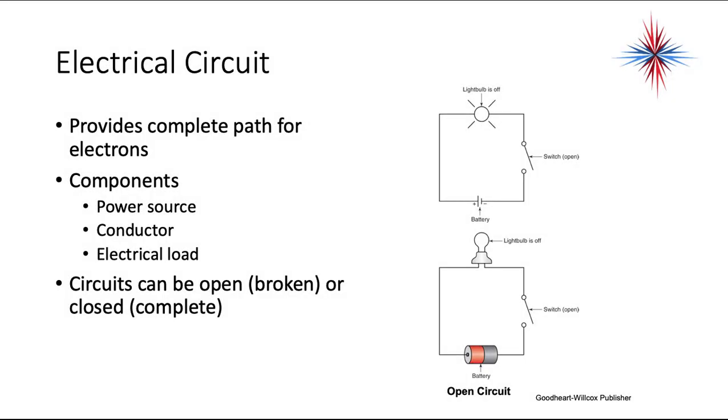An electrical circuit provides a complete path for electrons. It has to have a power source, it has to have a conductor, it has to have an electrical load. The circuit can be open, in other words a broken circuit, or closed, which is a complete circuit. The diagram on the right shows an open circuit because that switch is open. There's no complete path for electricity to flow. By the way, the top picture, the top diagram, is a schematic. The bottom diagram is a pictorial.